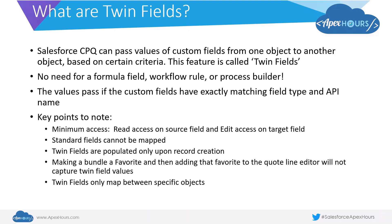There are a few other key points to note. When creating the fields, there should be a minimum of read access on the source field and a minimum of edit access on the target field. Also, this works only for custom fields — standard fields cannot be mapped. Third, twin fields are populated only upon record creation. Also note that if you mark a bundle as a favorite and add it to a quote line editor, it does not capture twin field values.